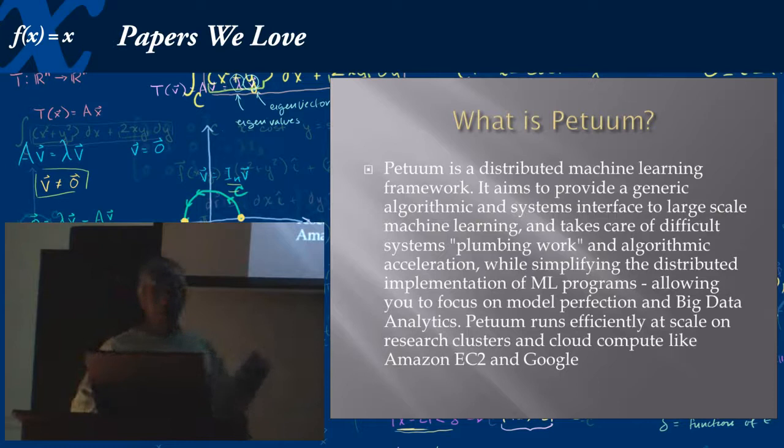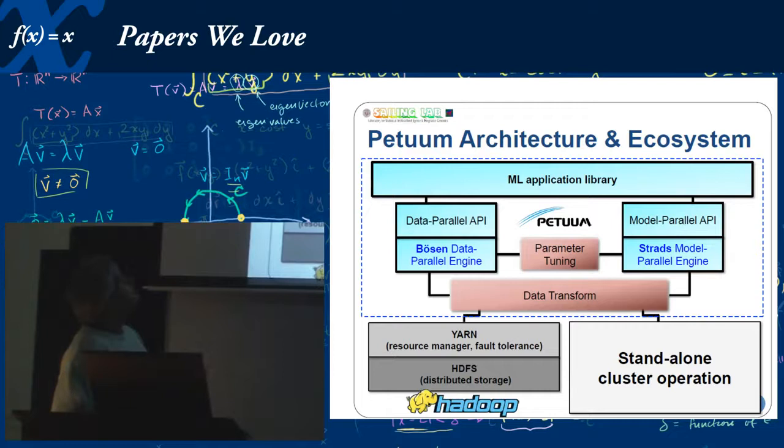So finally, focusing on the paper: what is Petuum? Or as a colleague once said, perhaps it's Petyo. It's a distributed machine learning framework. It provides a generic algorithmic and systems interface to large-scale machine learning. It takes care of difficult systems plumbing work and algorithmic implementation of ML programs, allowing you to focus on model perfection and big data analytics. Petuum runs efficiently at scale on research clusters and cloud compute like Amazon EC2 and Google. Basically, it does the hard work for you. You don't have to build a machine learning platform. You can set this up on Amazon, Google. I hope to be able to implement it on Azure, Microsoft's cloud platform.